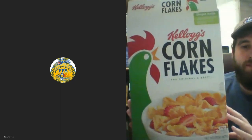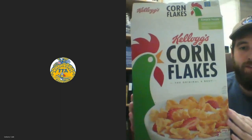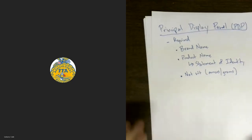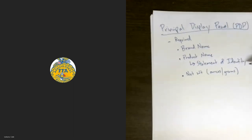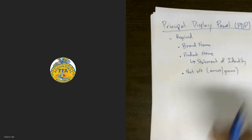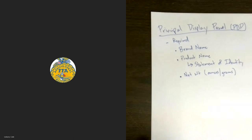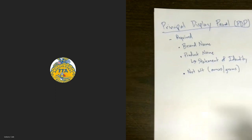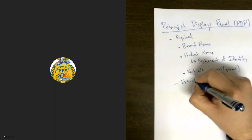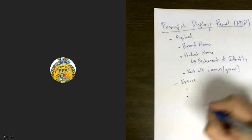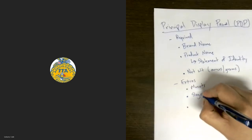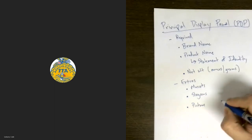So those are the parts of the Principal Display Panel on the front of most food packages. The legally required components are: brand name, product name, and if the product name isn't specific enough, a Statement of Identity, plus a net weight. On liquids, we'll put a capacity or volume in ounces or milliliters. Optional extras that help distinguish one product from another include mascots, slogans, and a picture or illustration of the product — like Tony the Tiger and 'They're great!' for Frosted Flakes.